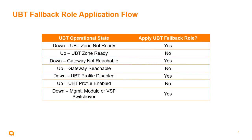Here is a chart showing instances where the fallback role may or may not be applied. If the zone is not ready or is down, fallback will be applied; if the zone is up, fallback will not be applied. If the gateway is not reachable and is down, fallback will be applied; if reachable and up, it won't. If the UBT profile is disabled, fallback is applied; if enabled and up, it's not applied. During a management module or VSF switchover, the fallback role will also be applied.